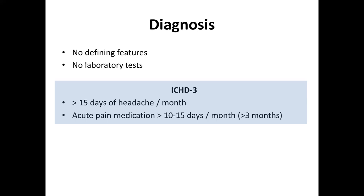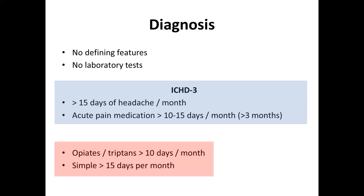In terms of the actual definitions, it's when people develop more than 15 days of new headache per month in the context of increased pain medication. It's slightly different for opiate-based medication and triptans compared to simple analgesics — with opiates and triptans, you only need to take these on more than 10 days in a given month for more than three months to increase the risk of developing medication overuse headache. Whereas with simple analgesics such as paracetamol and aspirin, it's more than 15 days per month.